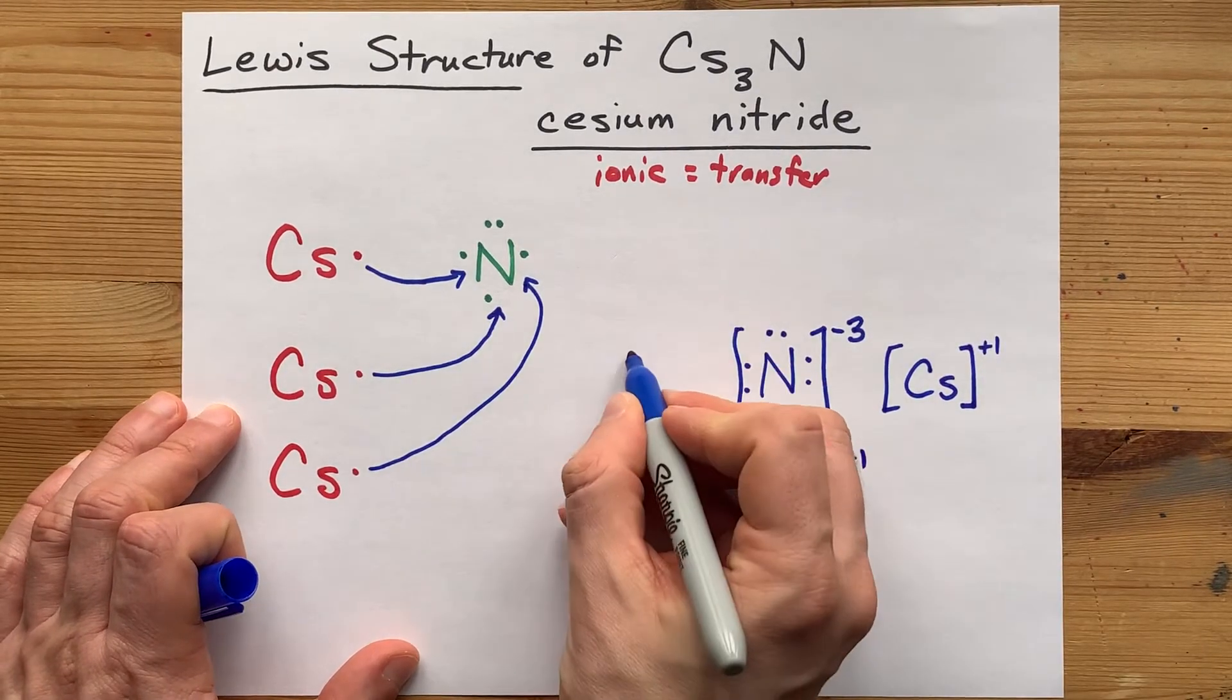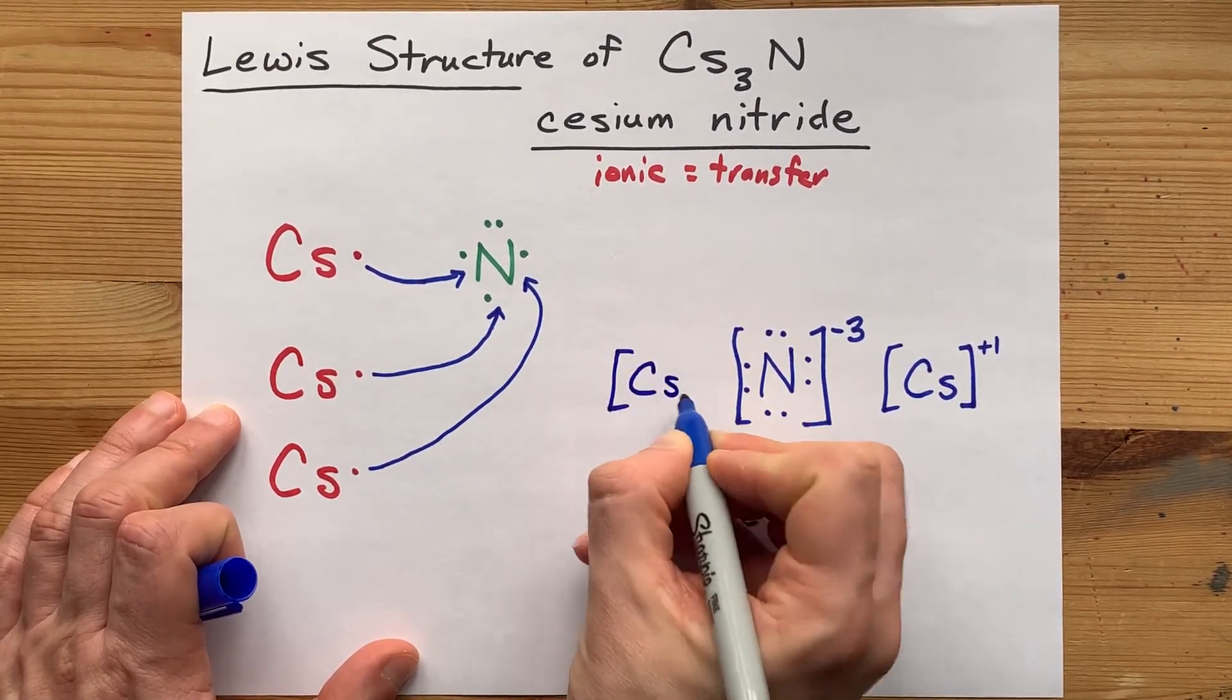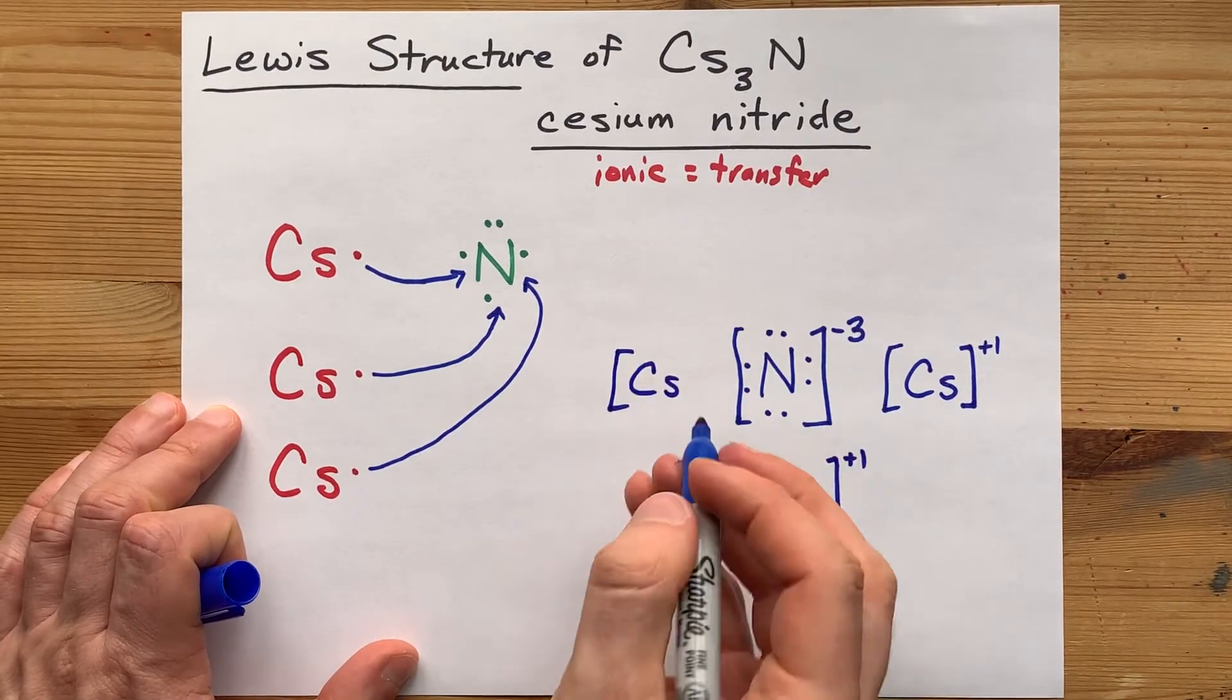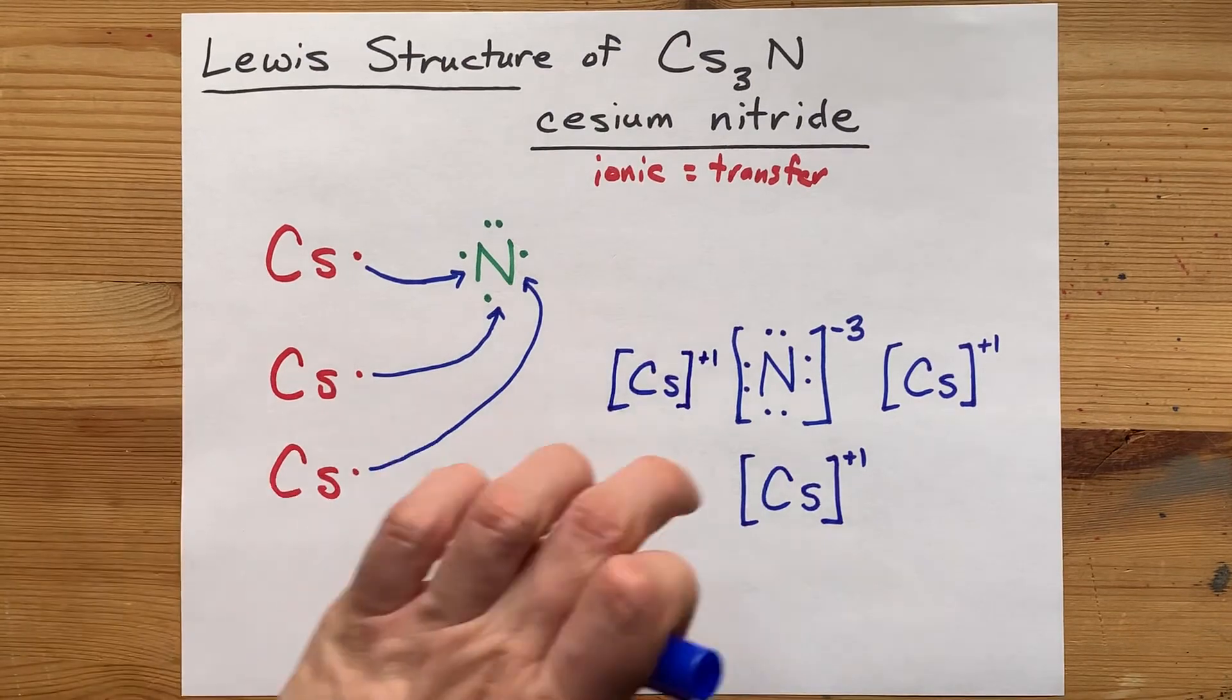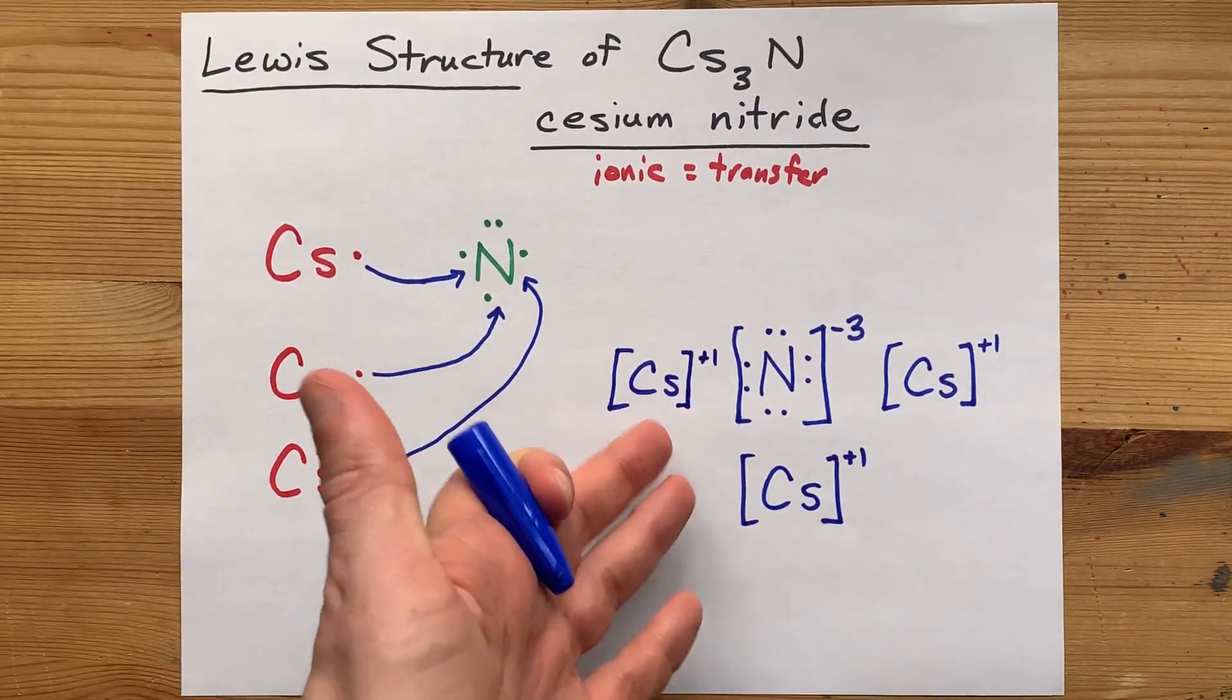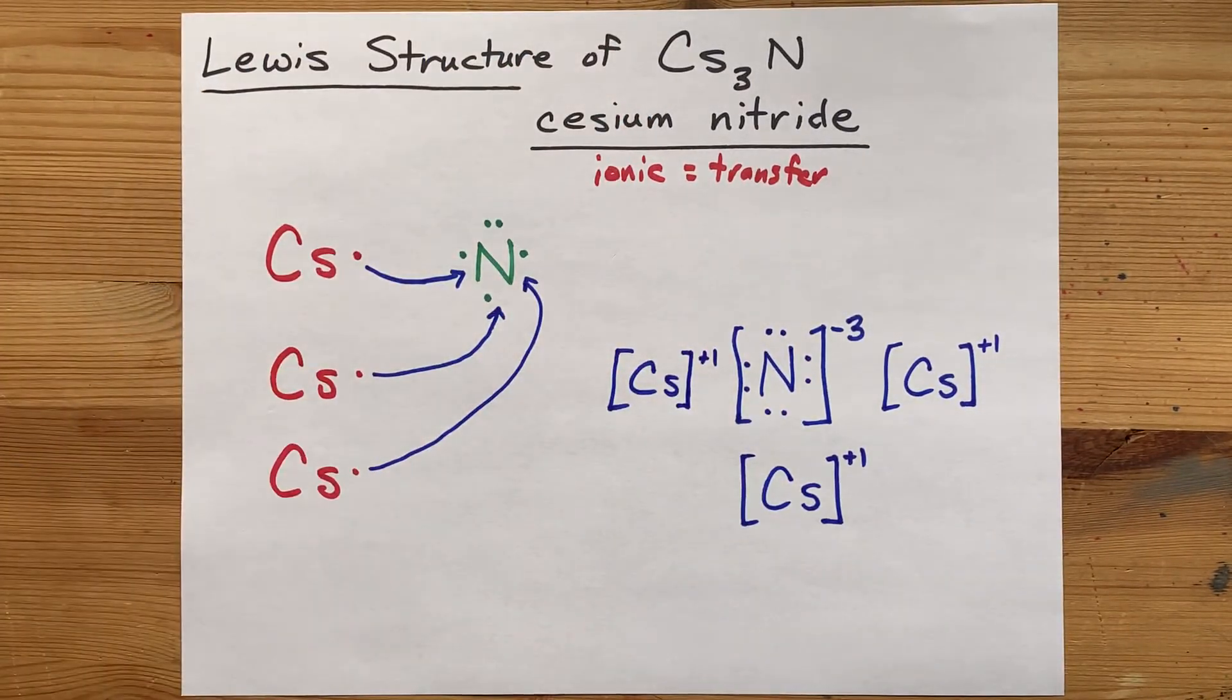I like to spread these out around the nitrogen. It kind of makes it look like a molecule, even though ionic compounds aren't officially molecules. It just makes it easier to look at, if you ask me. And there's my completed Lewis structure for the ionic compound cesium nitride.